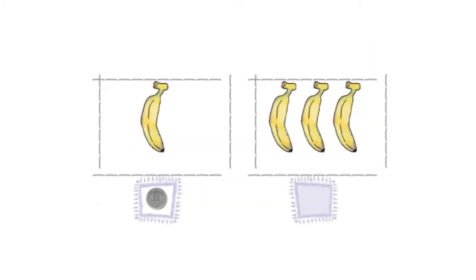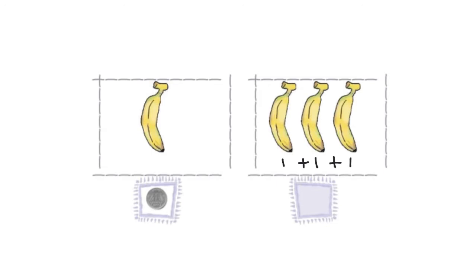In this picture, one banana costs one rupee. Now I have three bananas. How much will be the cost of three bananas? One rupee plus one rupee plus one rupee — in total, the three bananas will cost me three rupees.